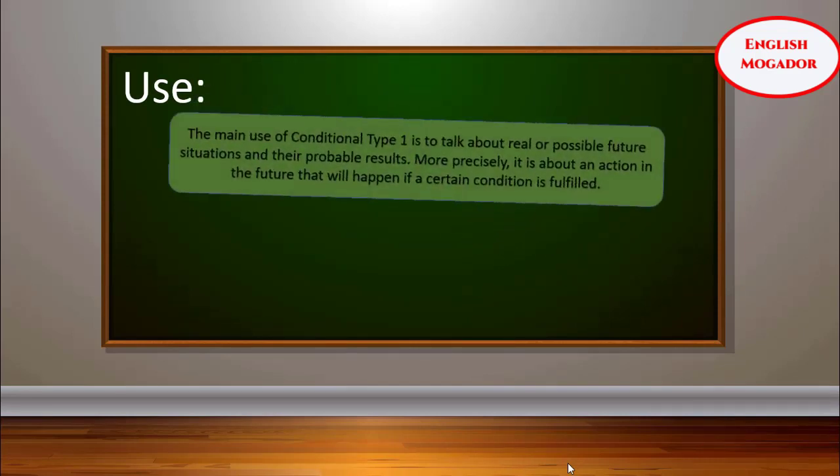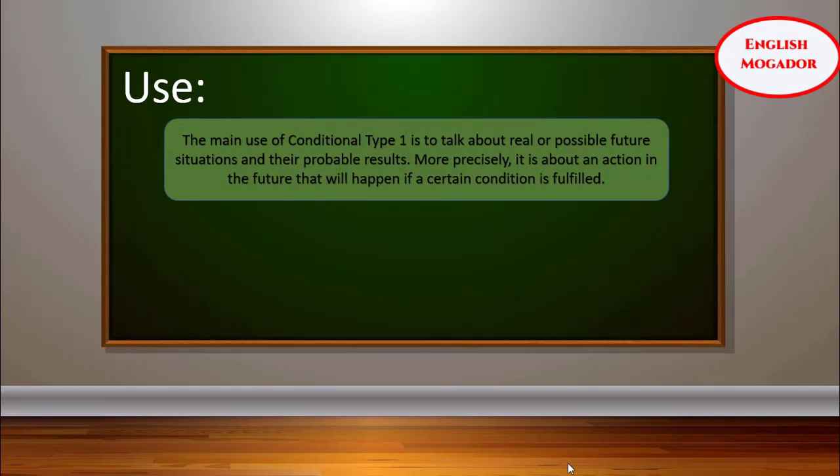Based on the animation, we deduce that the main use of Conditional Type 1 is to talk about real or possible future situations and their probable results. More precisely, it is about an action in the future that will happen if a certain condition is fulfilled.